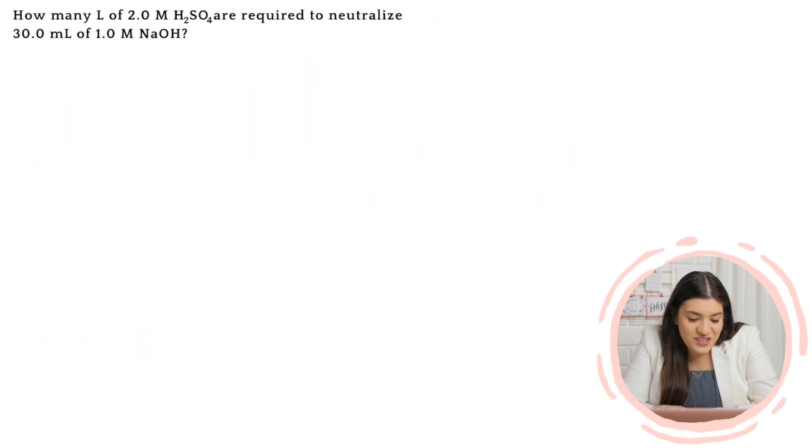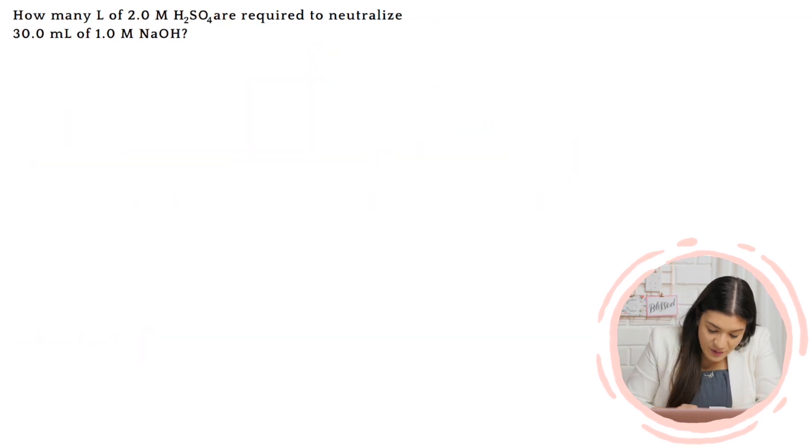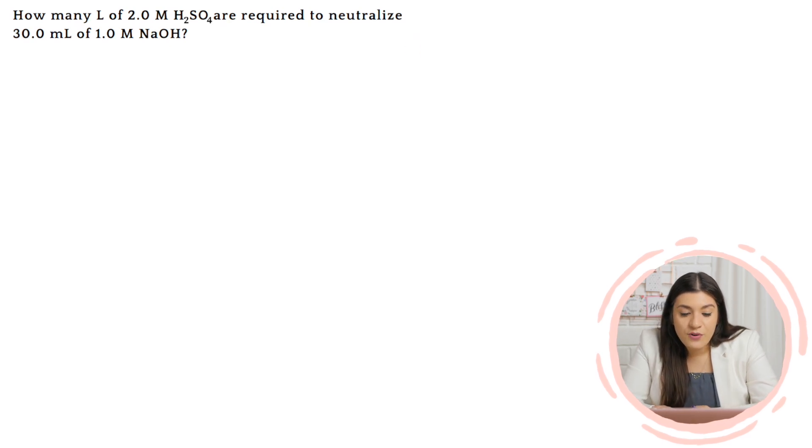This one requires a balanced equation. I tell you this because there's two different compounds, right? There's two different things. So I know that most likely we're probably going to have to do a mole ratio because I'm going from liters of H2SO4 to milliliters of NaOH, or vice versa. So we're going from either or. What I want to do first, because there's a keyword here that says neutralize, this is telling me what type of reaction it is.